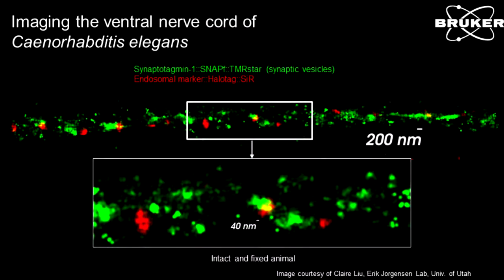Because of that ability to image deep, we can image intact organisms — fly larvae, or in this case C. elegans. This is the ventral nerve cord of C. elegans, an intact animal labeled with a SNAP tag and HaloTag labeled dyes. The worm was labeled, then fixed, and then imaged on the VUTARA. We're getting excellent super-resolved images of the C. elegans synapses in the ventral cord. You can't do this by standard imaging because in a standard ventral cord all these synapses bleed into each other below the diffraction limit of light. Here we can clearly see the synaptic vesicles and the endosome marker.